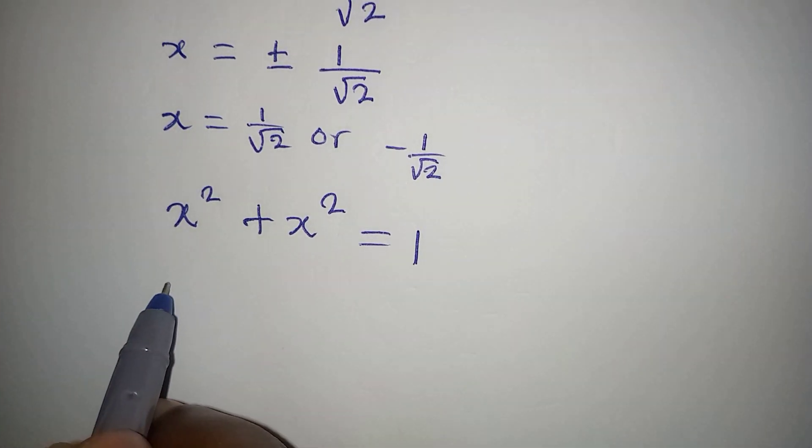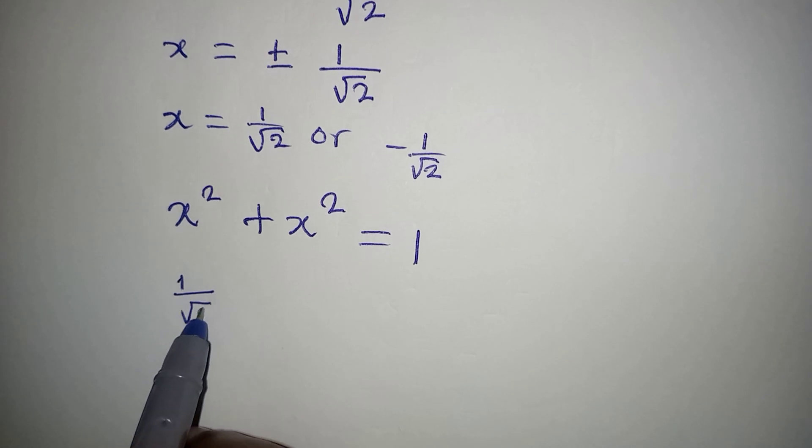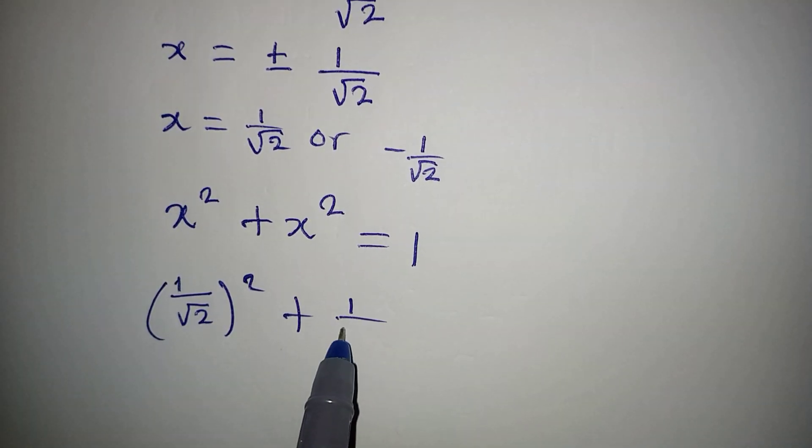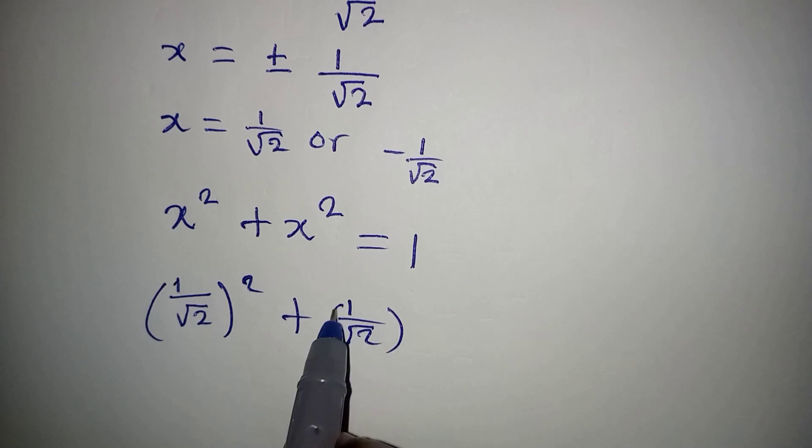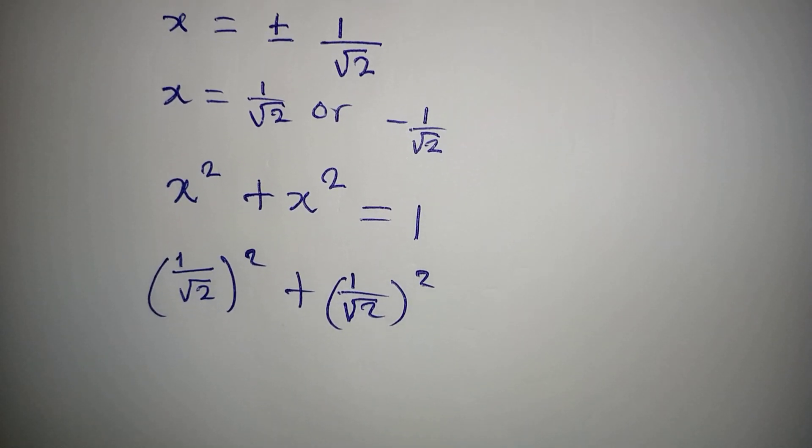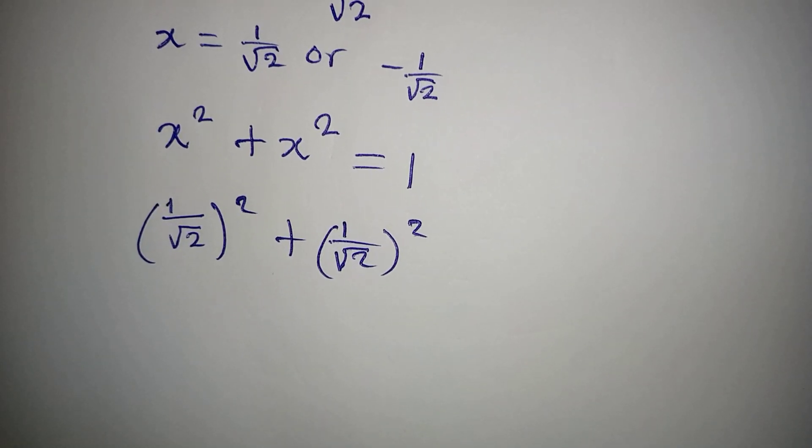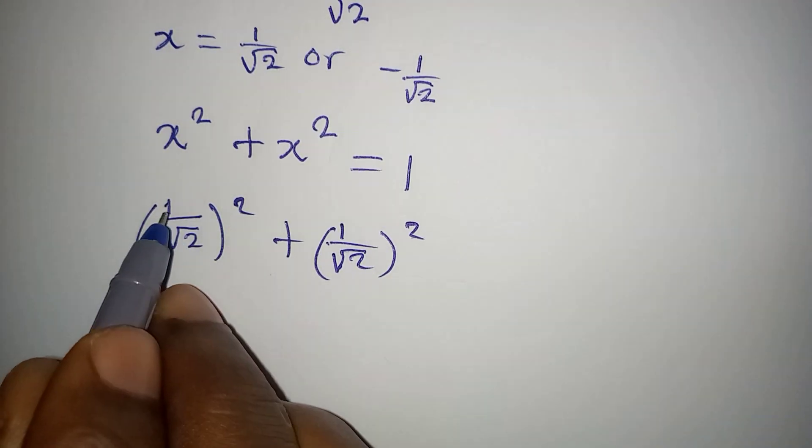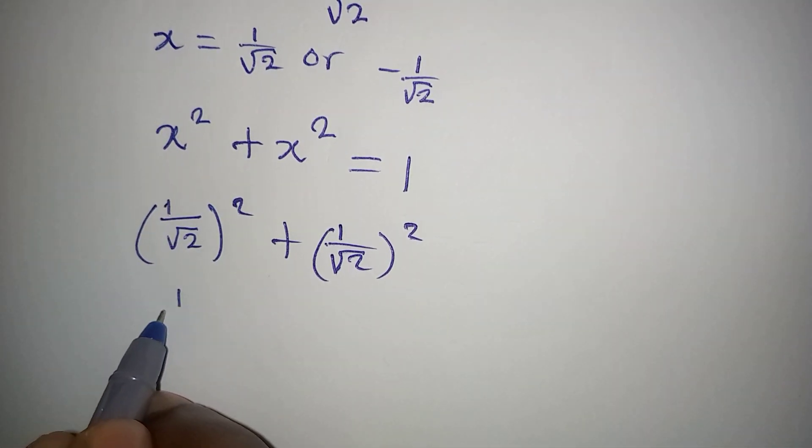I have 1 over root 2 squared, then plus 1 over root 2 squared. Will this give me 1? Let's try this. Now we have 1 squared, and 1 squared will still give 1 over, this can go with this so we have 2 under.